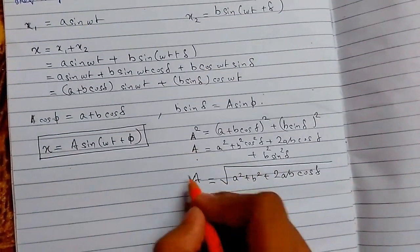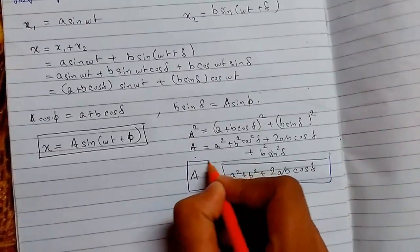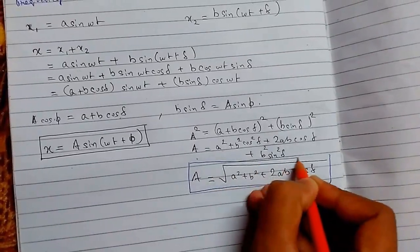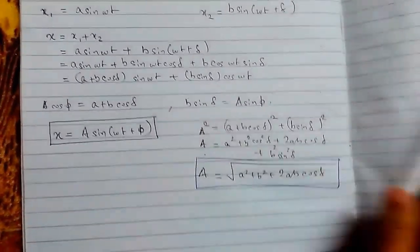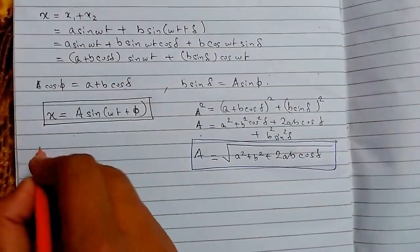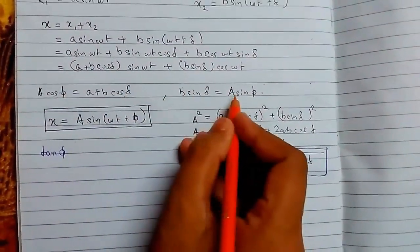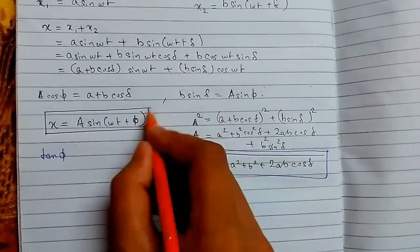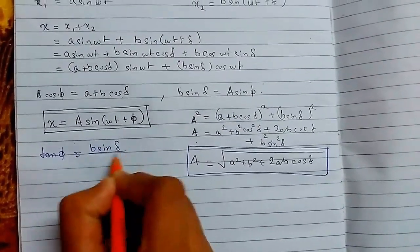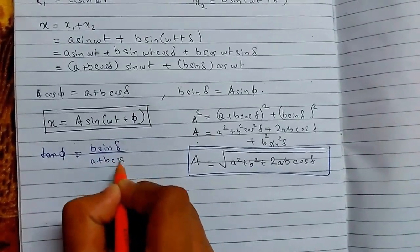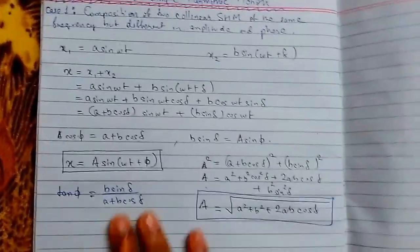This is our expression for the amplitude of the resultant wave. To find the phase, dividing both equations gives tan(φ) equals b sin(δ) divided by (a + b cos δ). This was our first part.